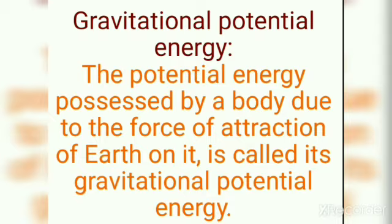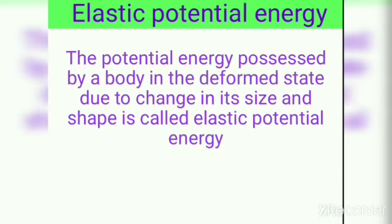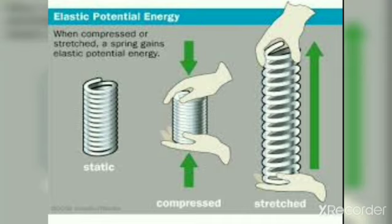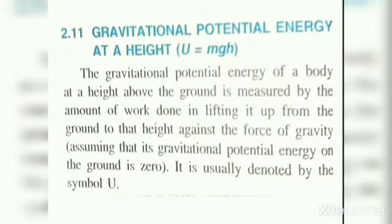Gravitational potential energy is the potential energy possessed by a body due to the force of attraction of the Earth on it. Elastic potential energy is the potential energy possessed by a body in the deformed state due to the change in its size and shape. Now we'll move on to gravitational potential energy at a height h.